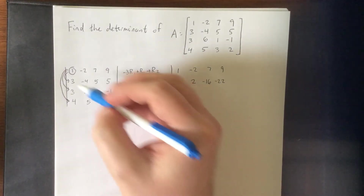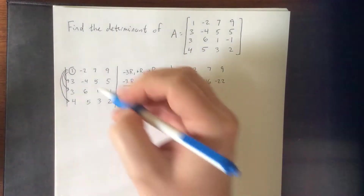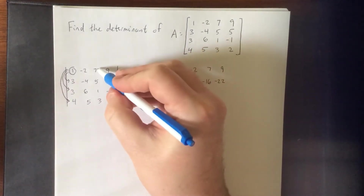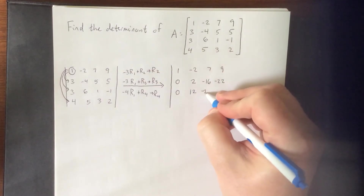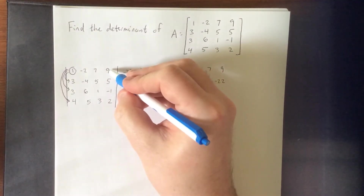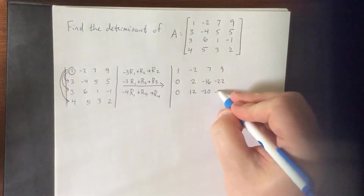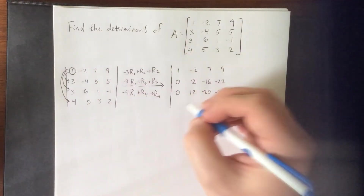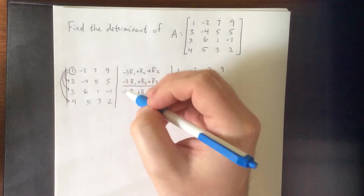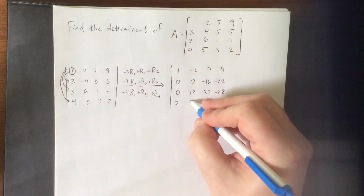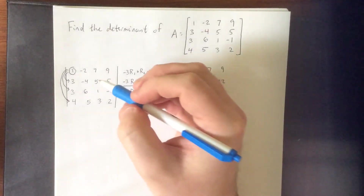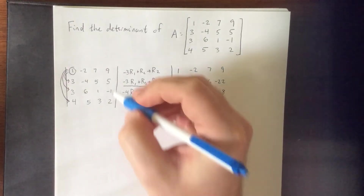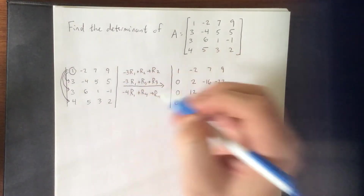For the new third row: -3×1 + 3 = 0; -3×(-2) + 6 = 12; -3×7 + 1 = -20; -3×9 + (-1) = -28. For the new fourth row: -4×1 + 4 = 0; -4×(-2) + 5 = 13; -4×7 + 3 = -25; -4×9 + 2 = -34.